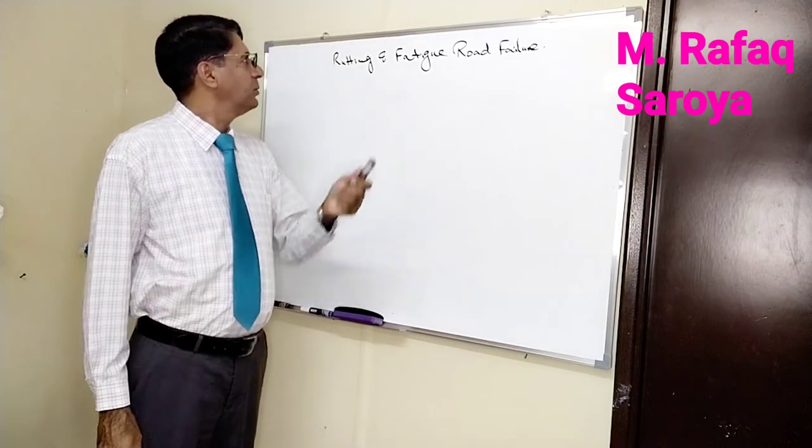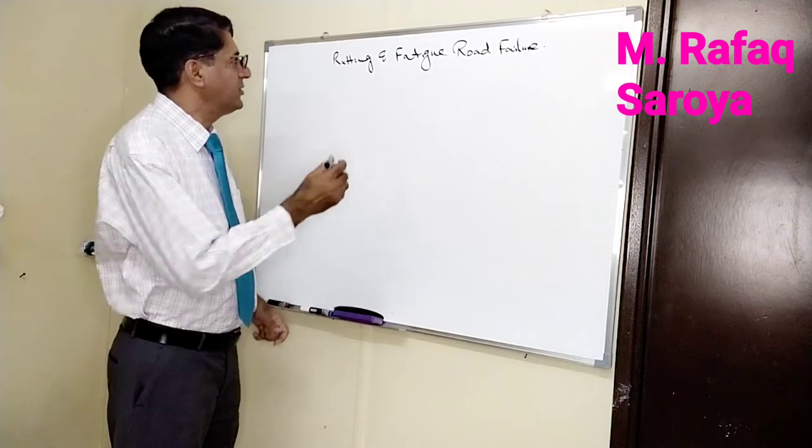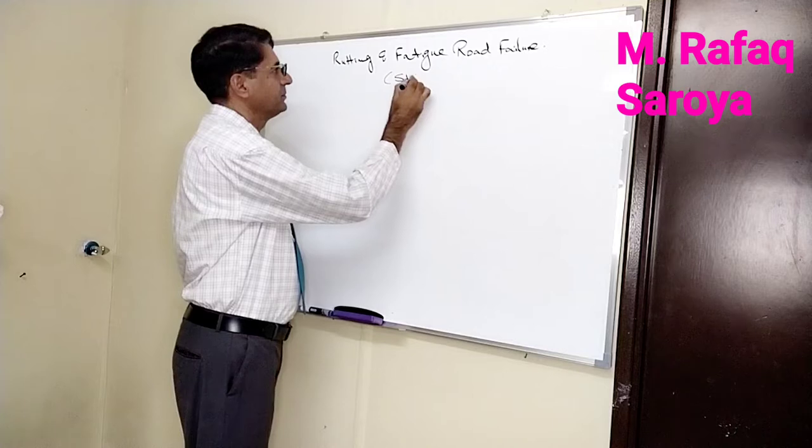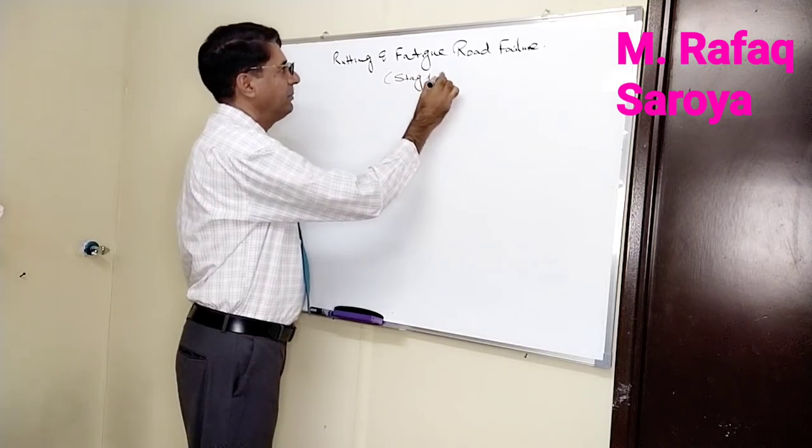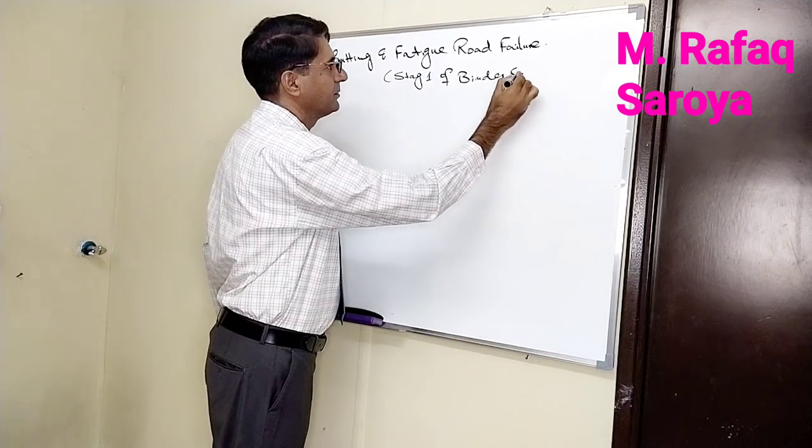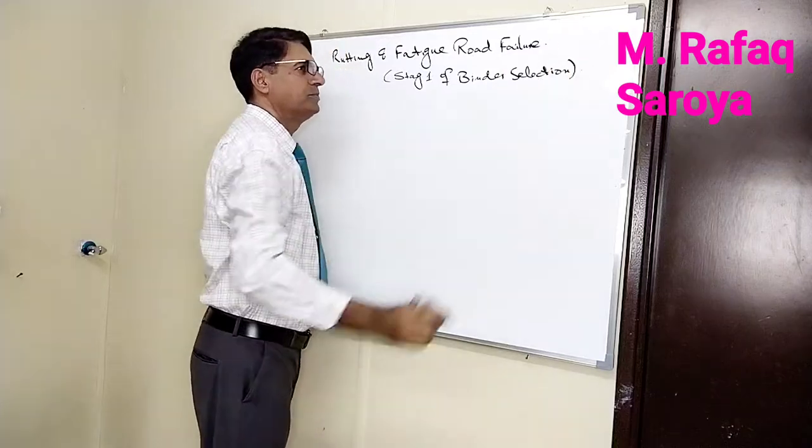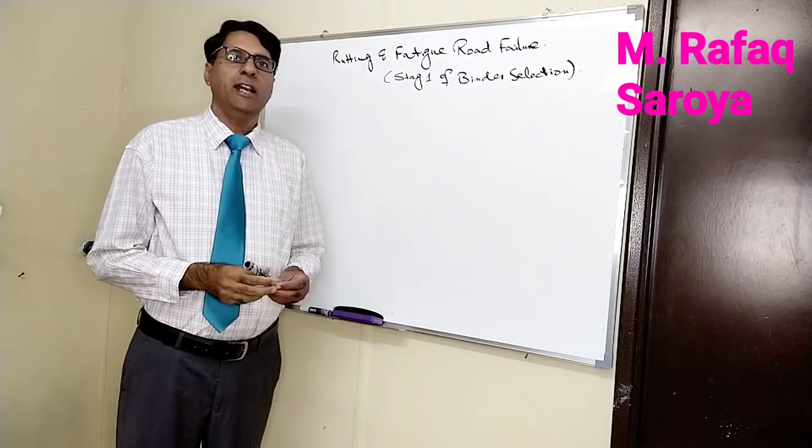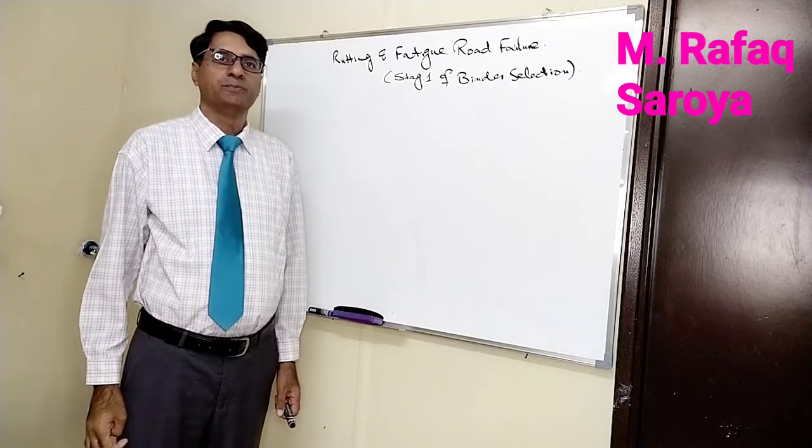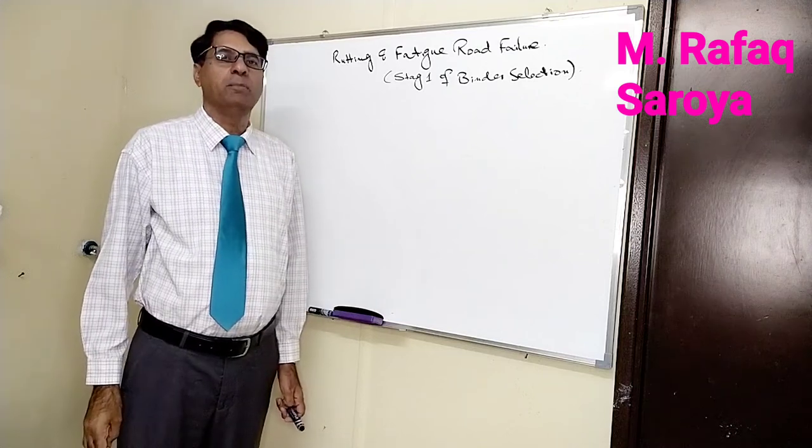Today we are going to start another lecture as part of stage 1 of binder selection. In the beginning, I told you there are three major types of distresses occurring on the road: rutting, fatigue cracking, and low temperature cracking.